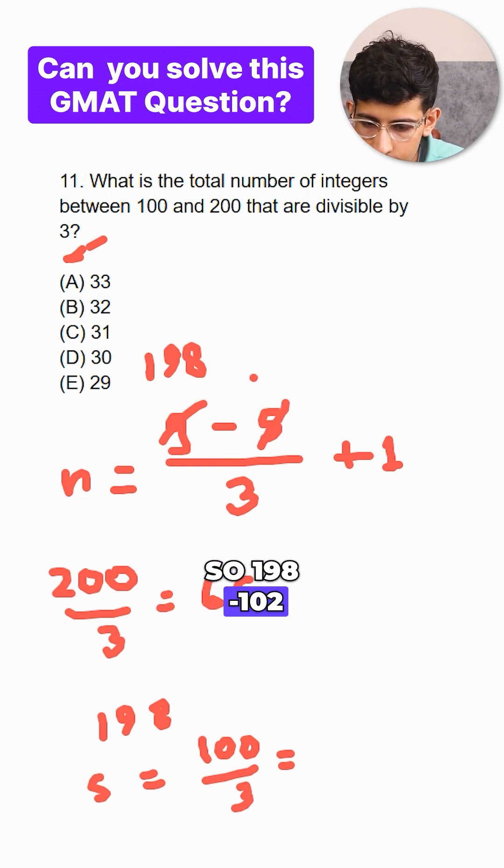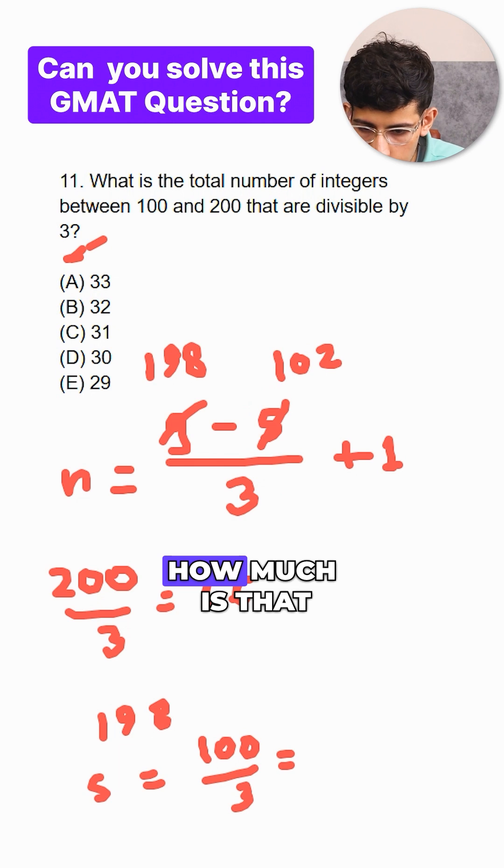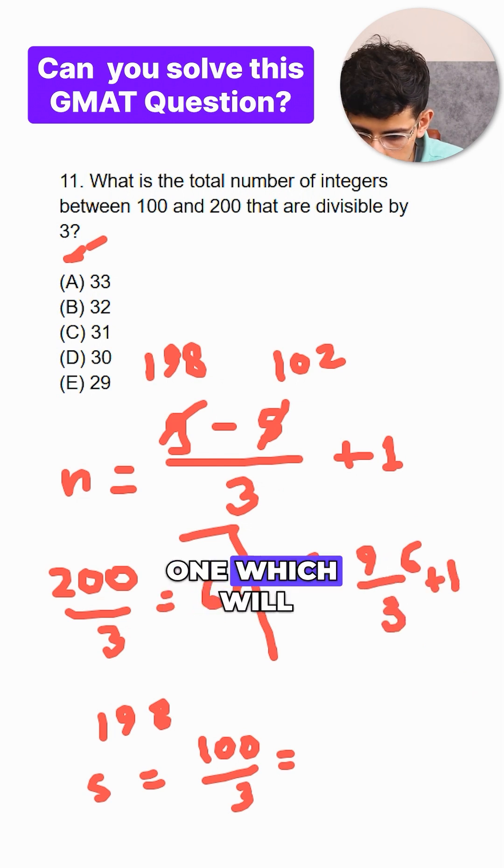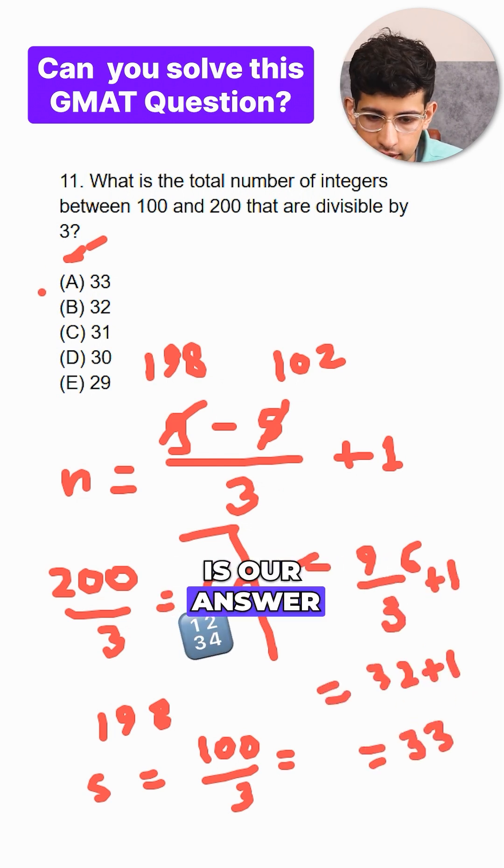So 198 minus 102. How much is that guys? That will be 96 divided by 3 plus 1 which will be 33 which is our answer.